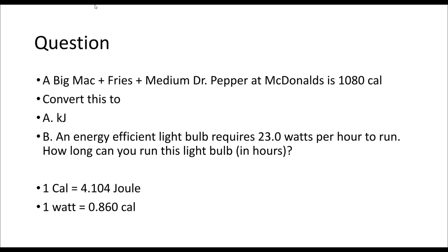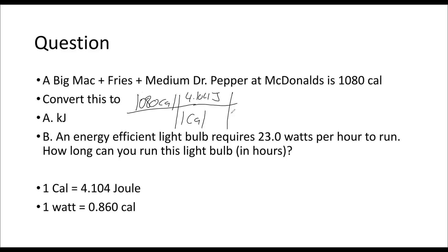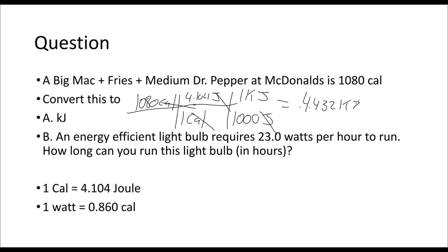Let's do this conversion. I have 1,080 calories. One calorie is 4.184 joules. There are 1,000 joules per kilojoule. That gives us 4,432 kilojoules.